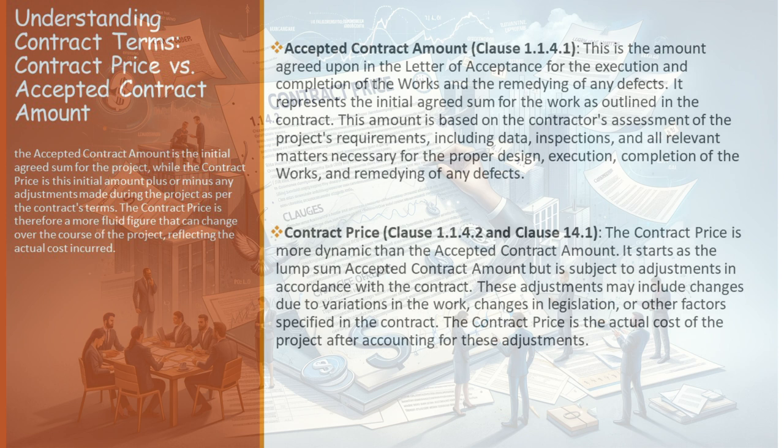In summary, while the accepted contract amount and the contract price may seem similar at first glance, they serve different purposes in a contract. The accepted contract amount is the initial agreed sum, based on a comprehensive assessment of the project's needs. The contract price, on the other hand, is a more fluid figure, reflecting the actual cost of the project as it evolves.